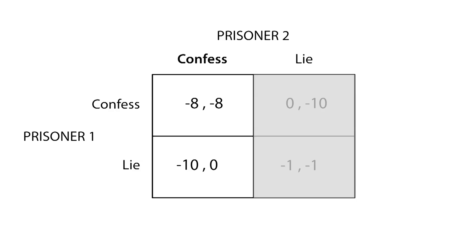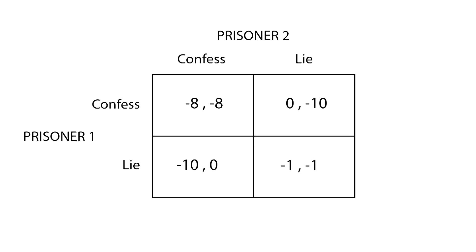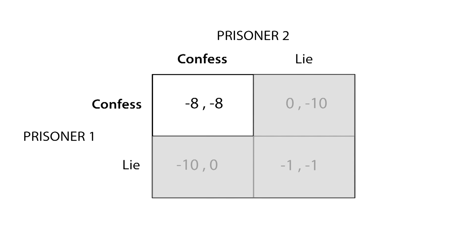Since prisoner 2 is going to confess, player 1 must confess too, since he will be better off. Proceeding inversely, we analyze the beliefs of prisoner 2 about prisoner 1's strategies. This gets us to the same point — the rational thing to do for prisoner 2 is to confess. Confess-confess is the Nash equilibrium.